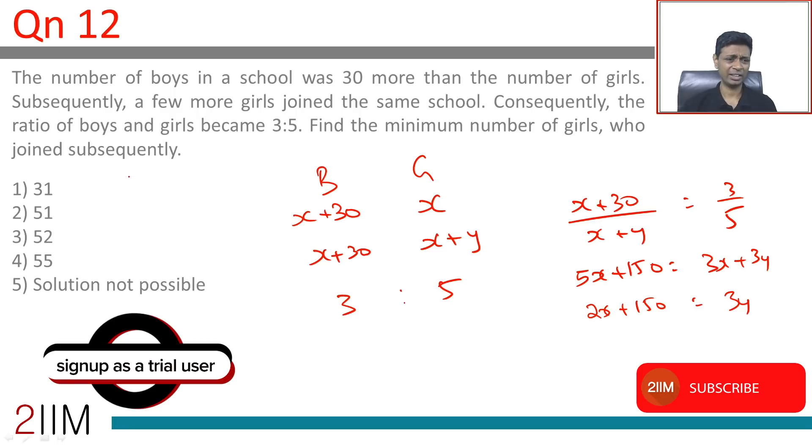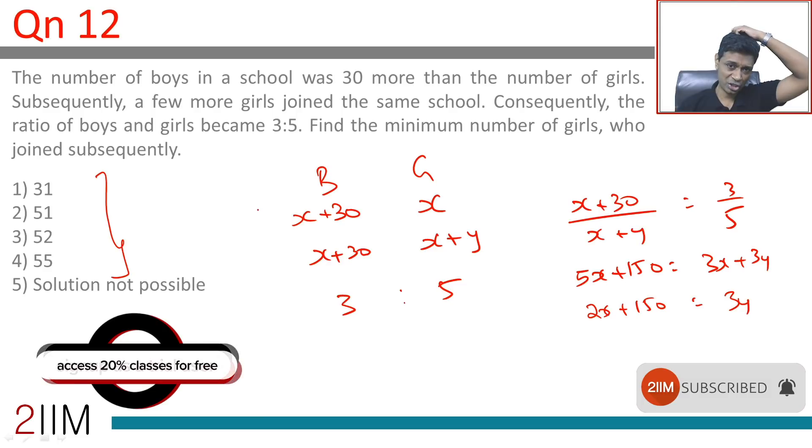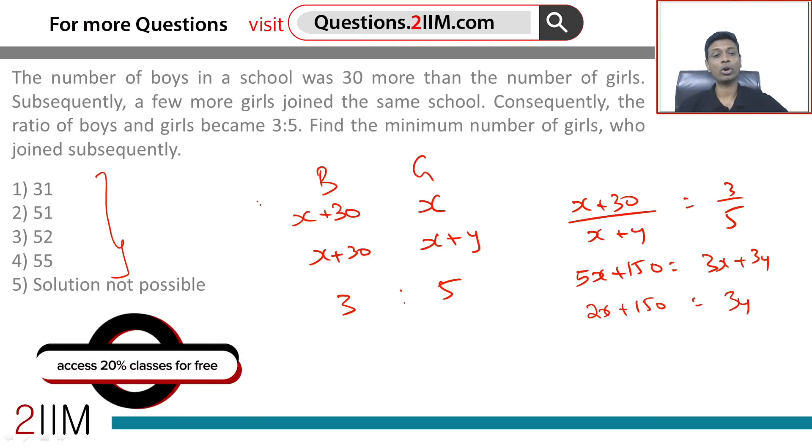Unfortunately, 50 is not in our choices. This tells us the question is saying x is at least 1. But if you ask me, if there are 30 boys in a class and 0 girls, the statement still holds good.